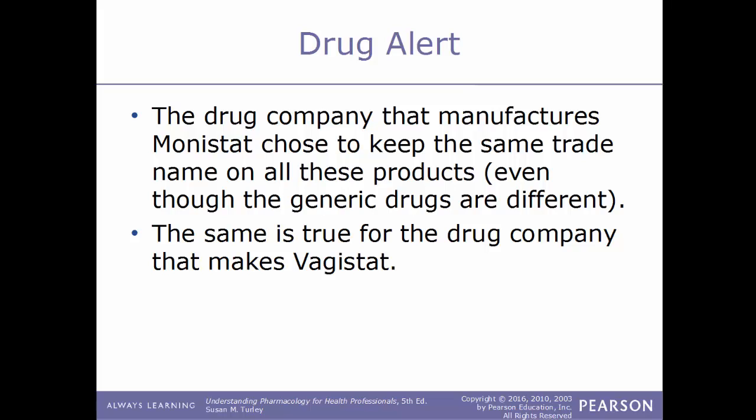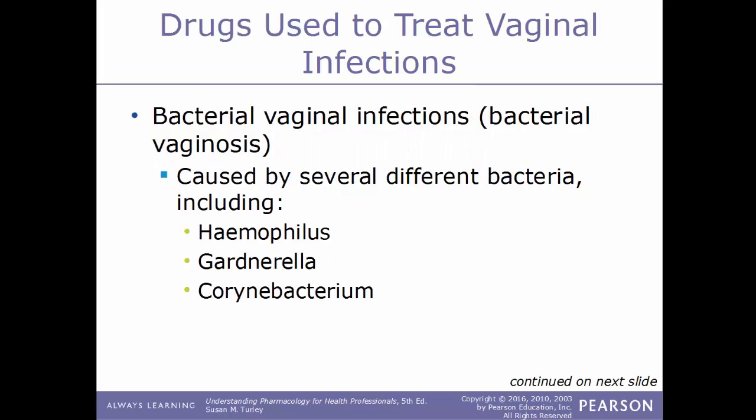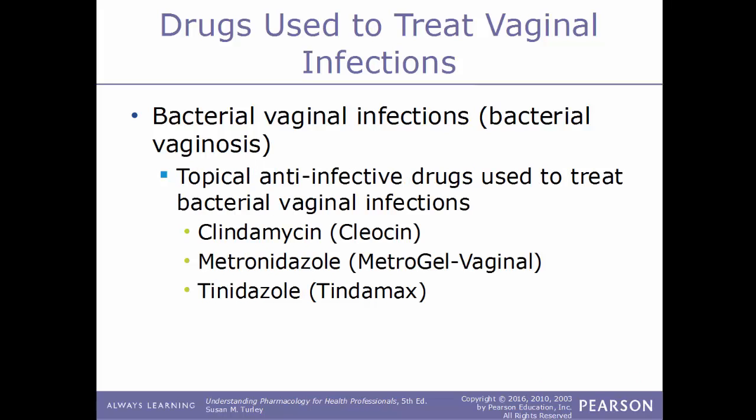For bacterial vaginal infections, also known as bacterial vaginosis, these can be caused by several different types of bacteria, including Haemophilus, Gardnerella, and Corynebacterium. Bacterial vaginal infections are treated with topical anti-infective drugs. Examples include clindamycin (Cleocin), metronidazole (MetroGel-Vaginal), and tinidazole (Tindamax).